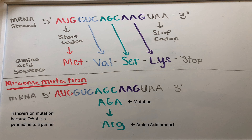Next is a missense mutation. This is when the base change codes for a different amino acid. Here we have AGC coding for the amino acid SER, and when the mutation occurs to AGA, the amino acid is now ARG. This is a transversion mutation because C is changed to A.